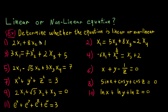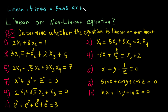In this video we want to determine if an equation is linear or not linear. First we have to know what linear means. Linear has a form like ax1 plus bx2 equal C — of course in two dimensions.